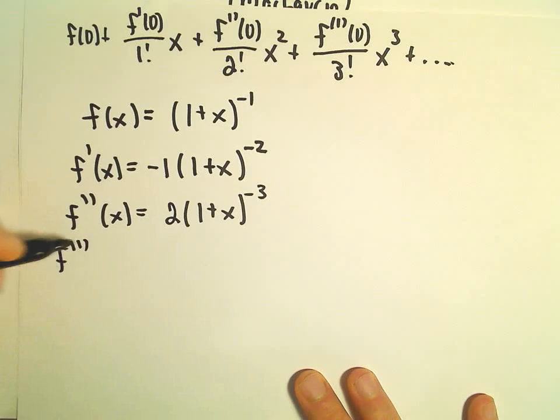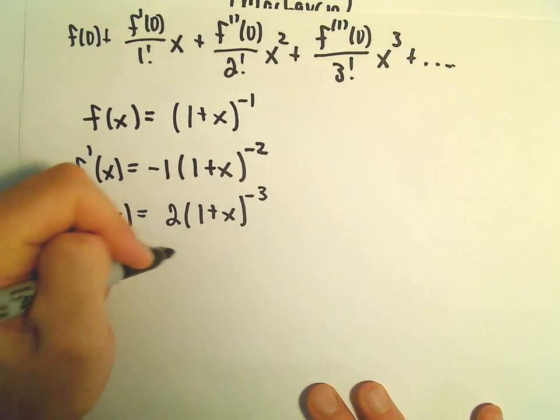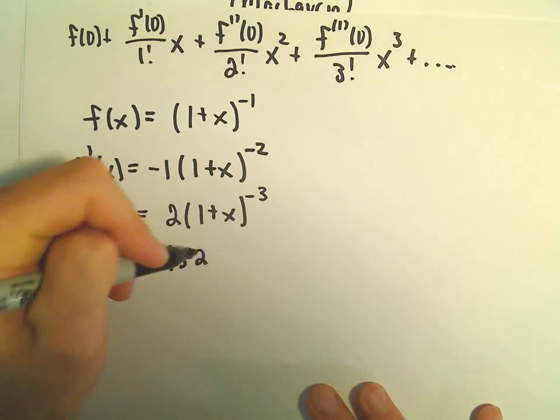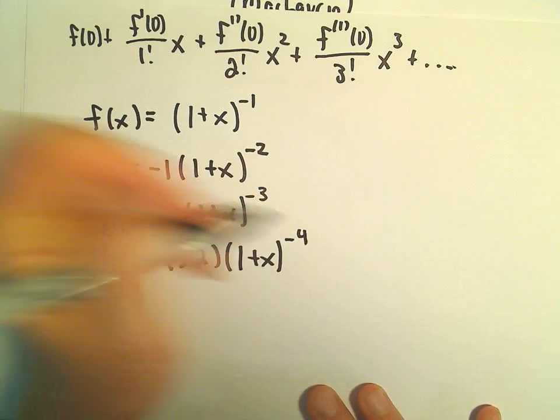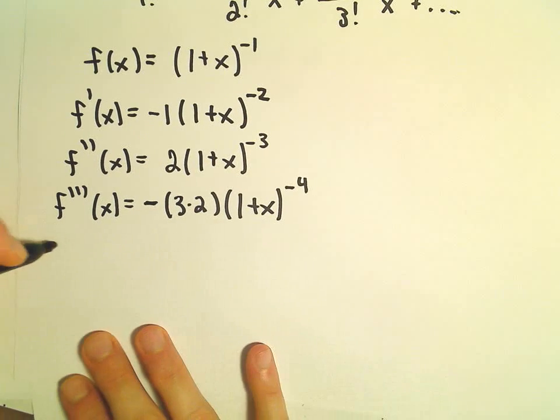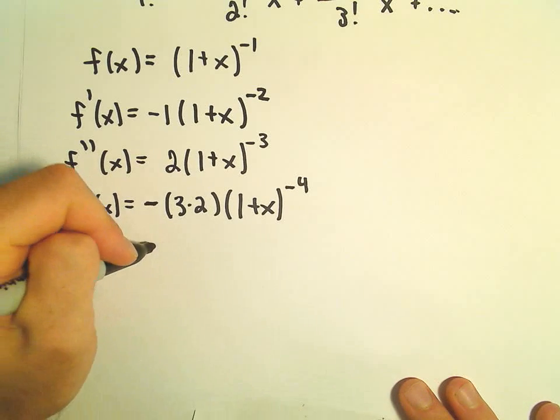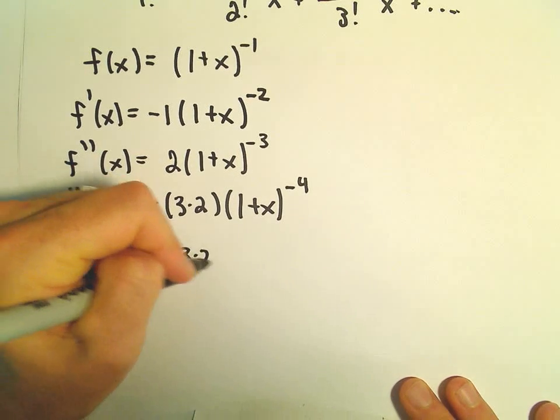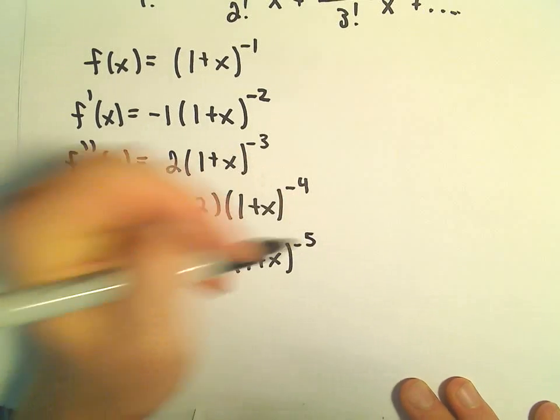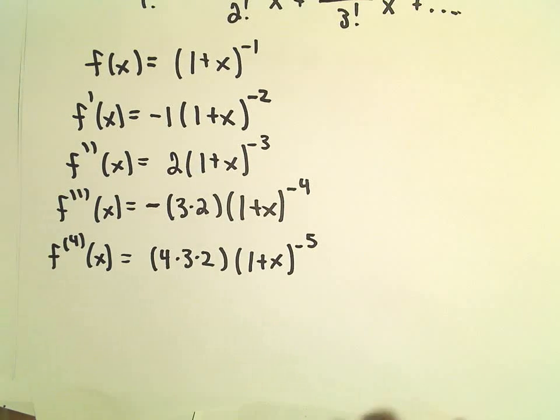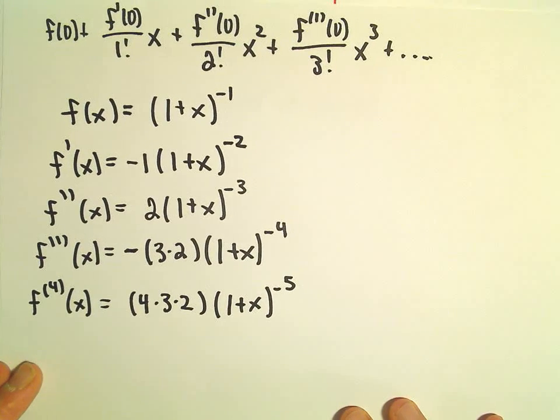Our third derivative, we could multiply this out, but I'm not going to. We would have a negative. Notice we would have 3 times 2, and then we would have (1+x)^(-4). Then I'm going to do at least one more, so the fourth derivative. We would now have a positive, but then we would have 4 times 3 times 2, and then (1+x)^(-5).